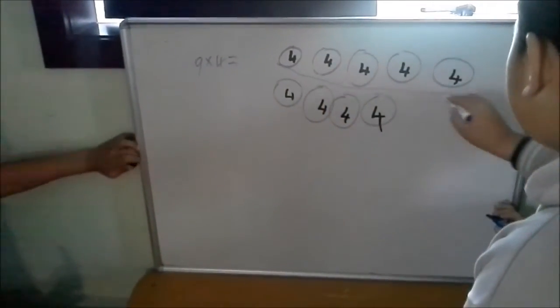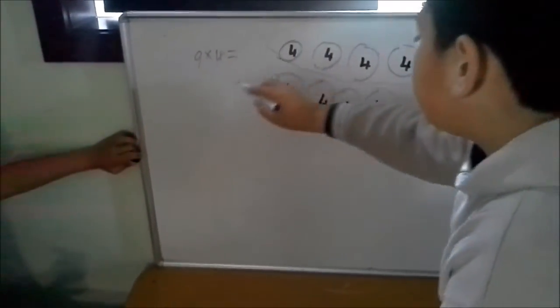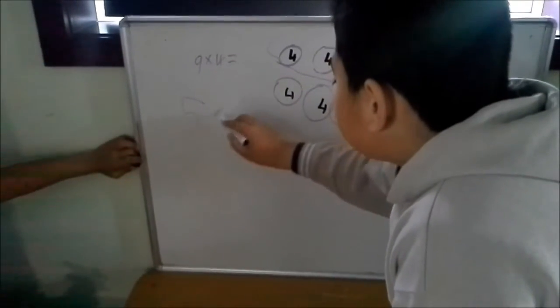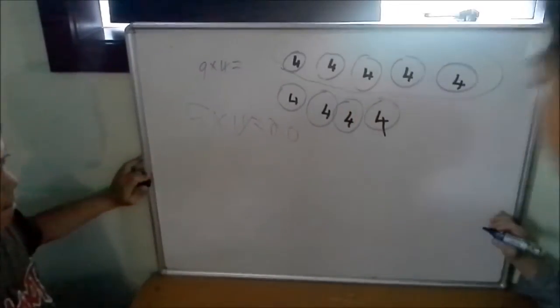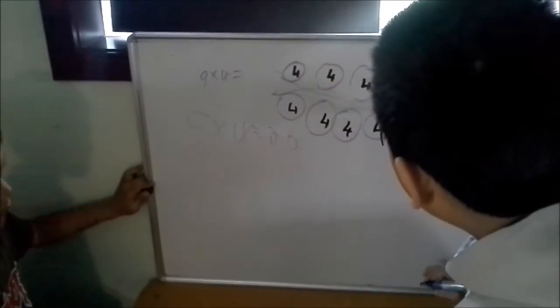And as you can see there's five over here. So we do five times four equals three. And there's four left over.